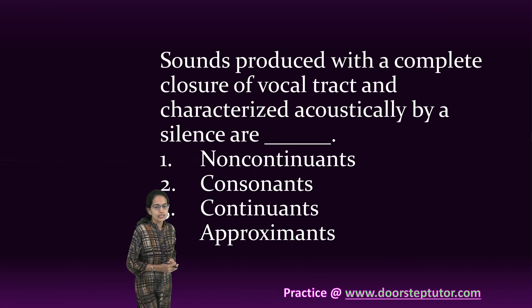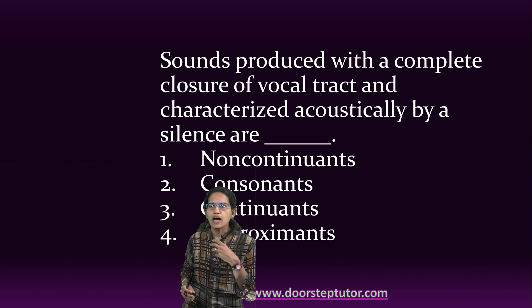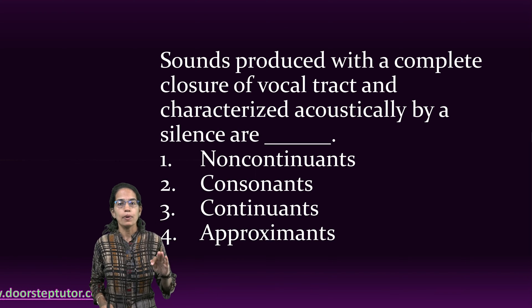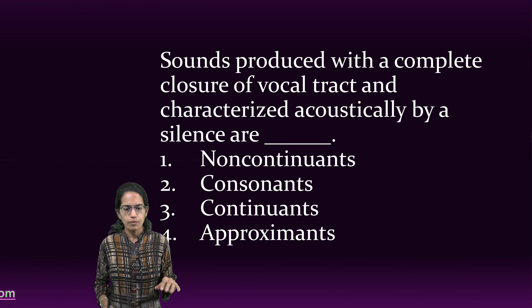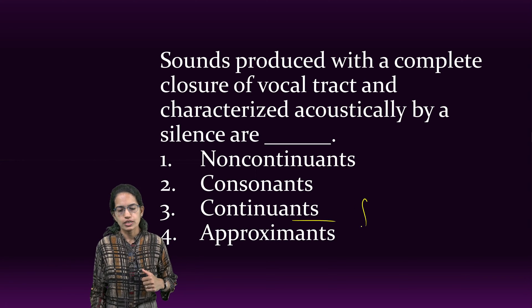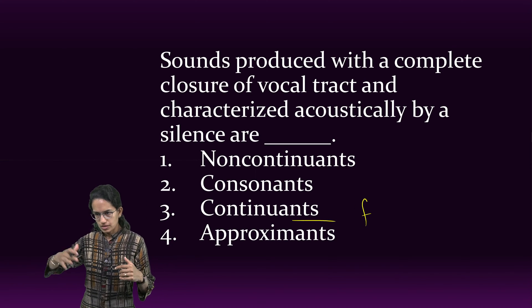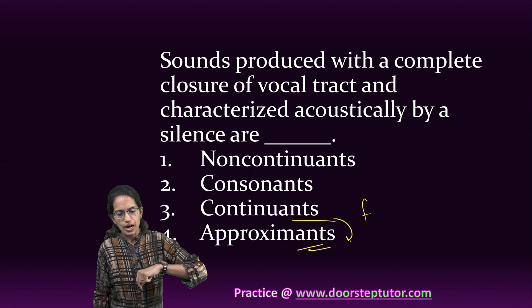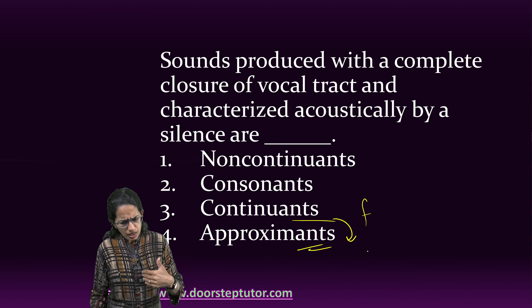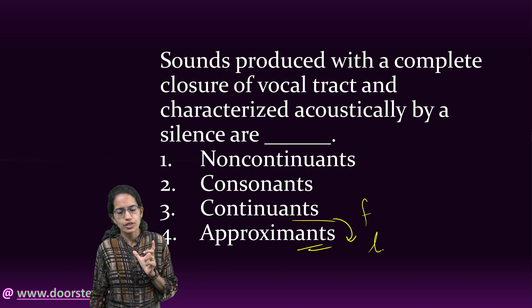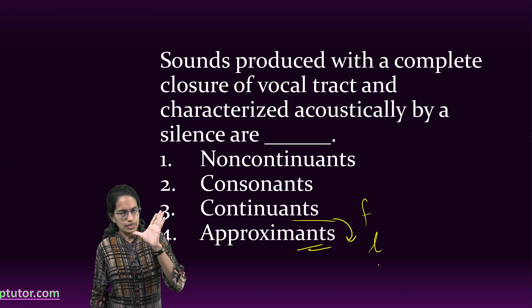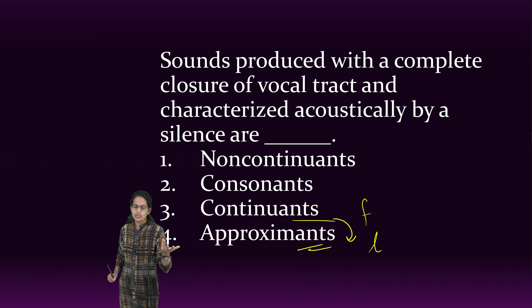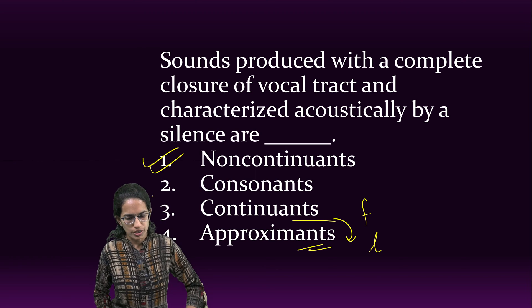The next question talks about non-continuants. Non-continuants are sounds where you have a complete closure of the vocal tract and there is silence — for example, P and B. On the other hand, continuants like F have a continuation and do not stop. Approximants are a subpart of continuants, but they have a constriction of the vocal tract — for example, L — so there is not a complete closure but a constriction. The correct answer here would be non-continuants.